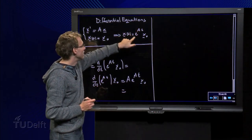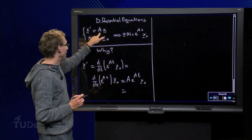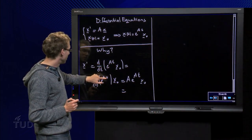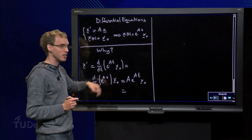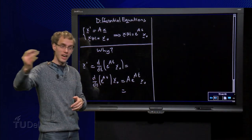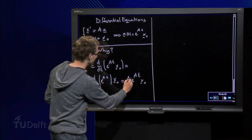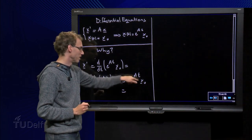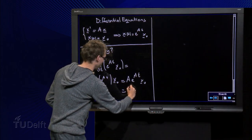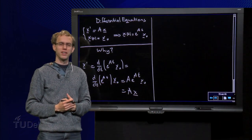So let's take the d dt of x and check whether it equals a times x. So d dt of x equals the d dt of the exponent here times x0, because x0 is the initial condition that does not depend on t, so you can take it out, and the d dt of e to the power at equals a times e to the power at times x0, which was already there. This part over here is our x, so we find equals a of x. So indeed x' equals a times x.